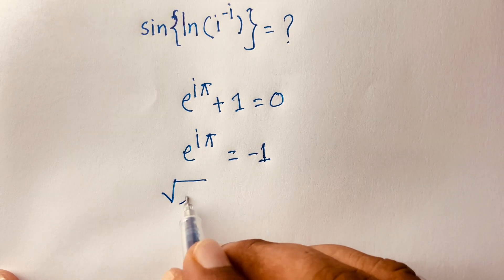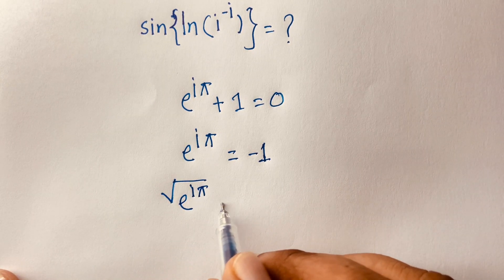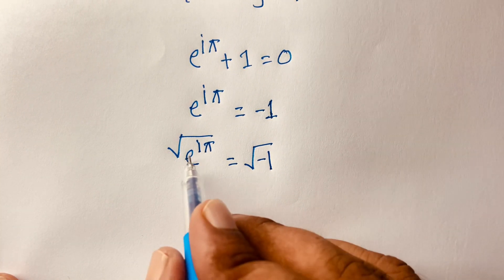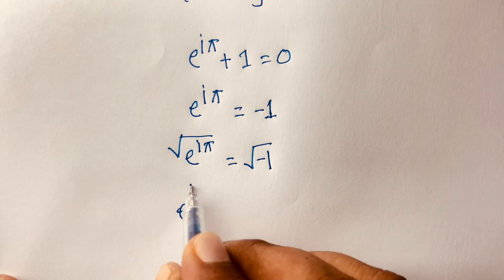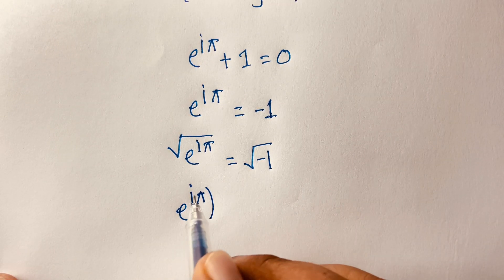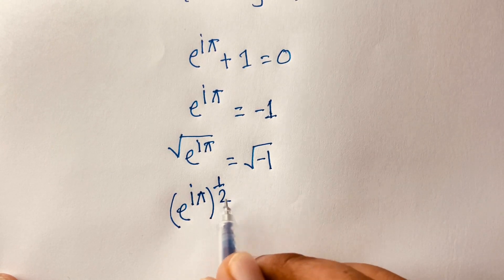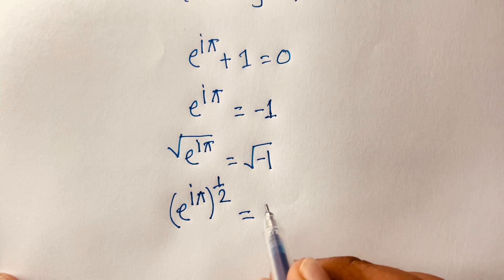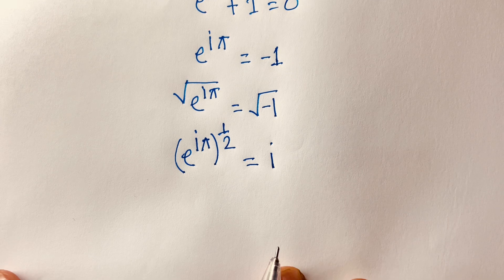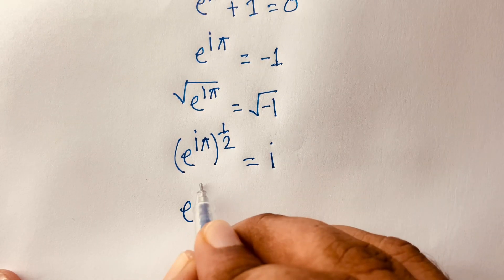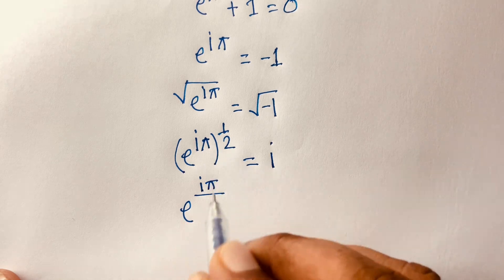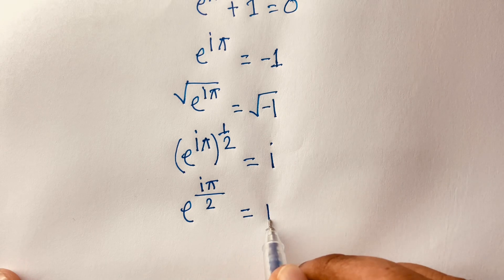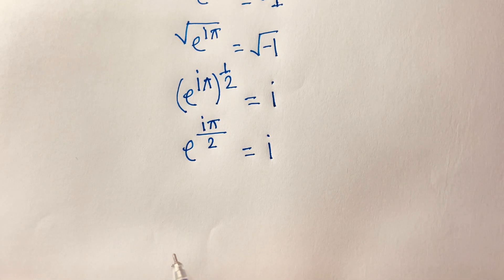Then I take the square root of both sides. So the square root of e to the power i*pi is equal to the square root of minus one. The power becomes one half because of the square root, so e to the power i*pi over 2 is equal to i.